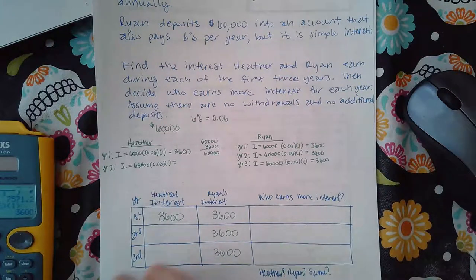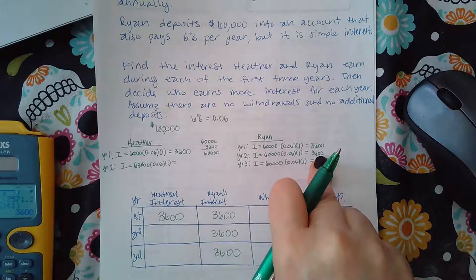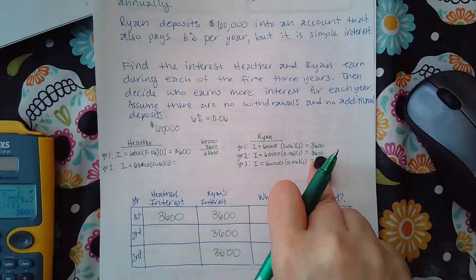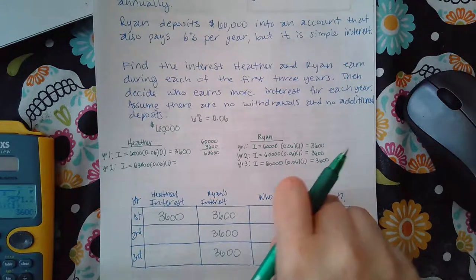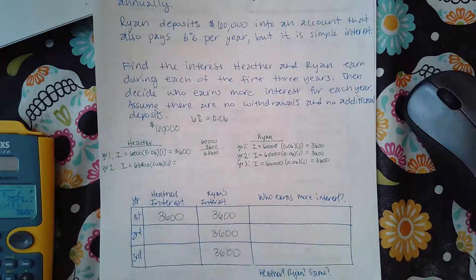And normally this is the one that happens in banks. This is more like if you borrow some money from your friend and your friend says I'm going to charge you 36 or 6% each year, they're probably using this one, they're probably not using this method. But the bank is going to use this method.